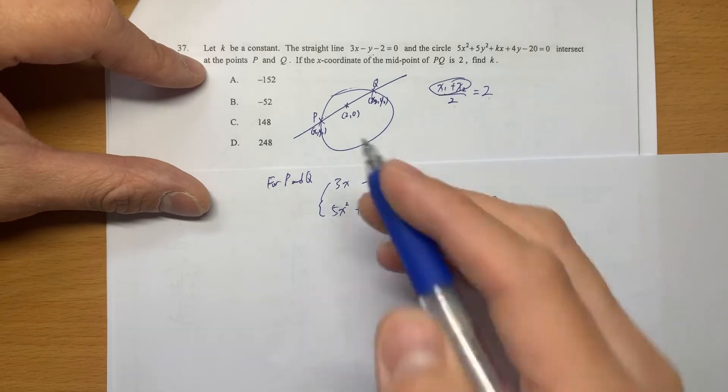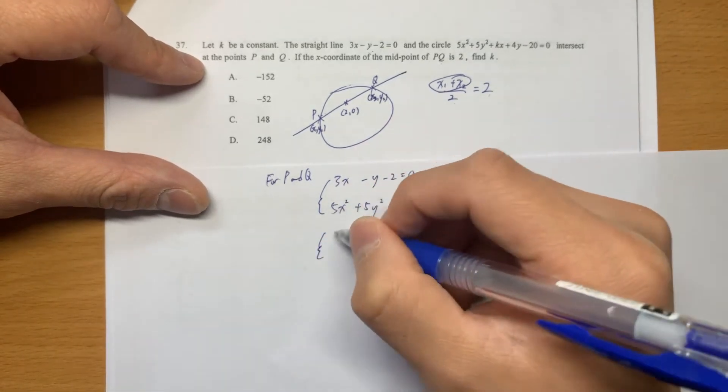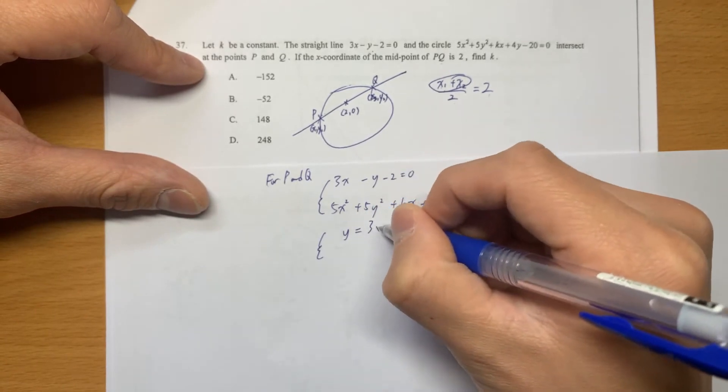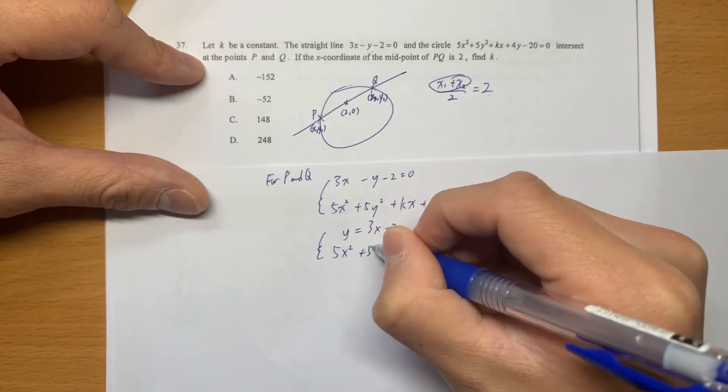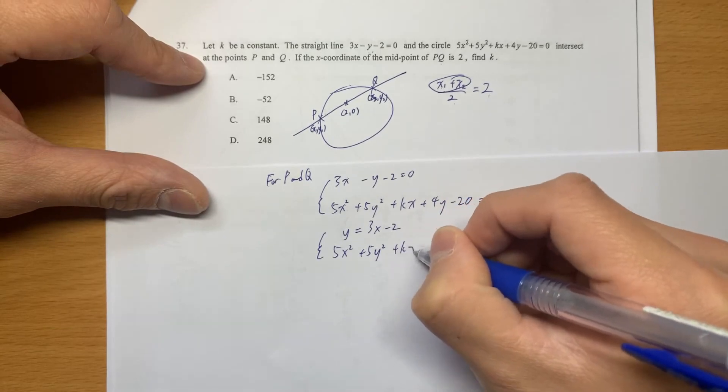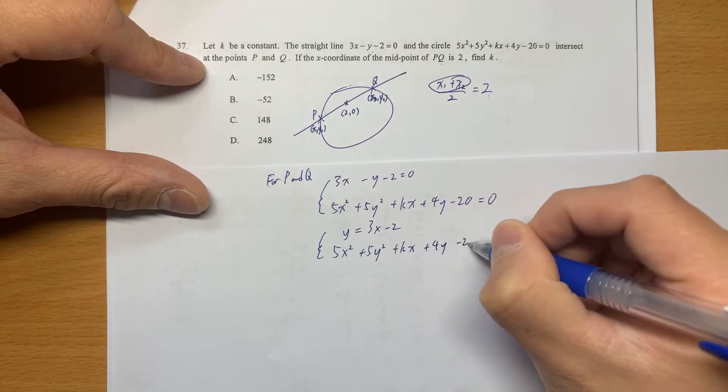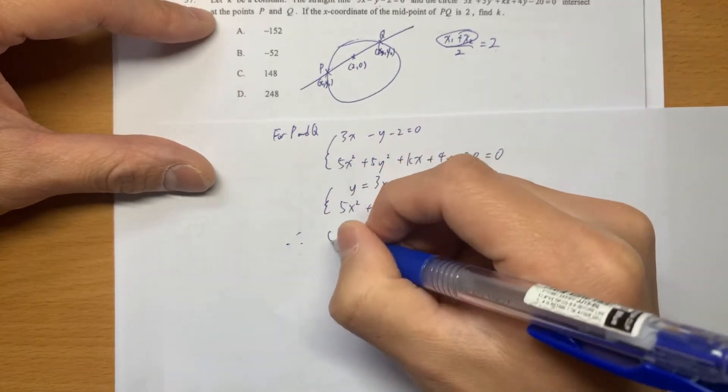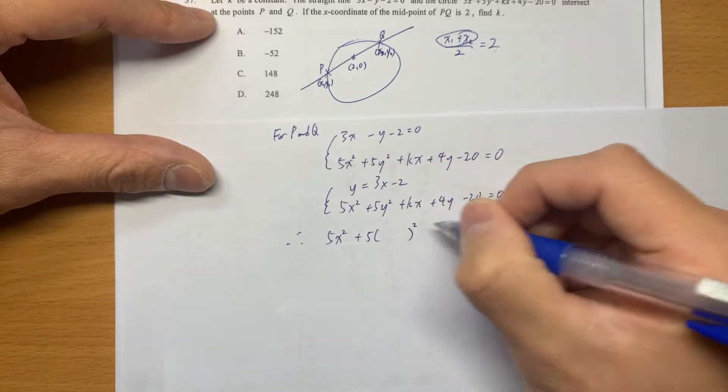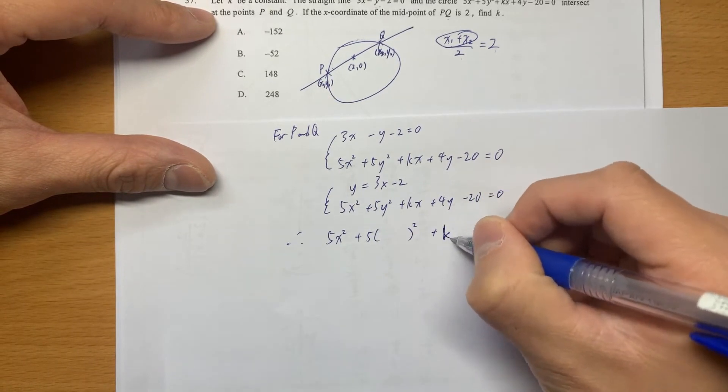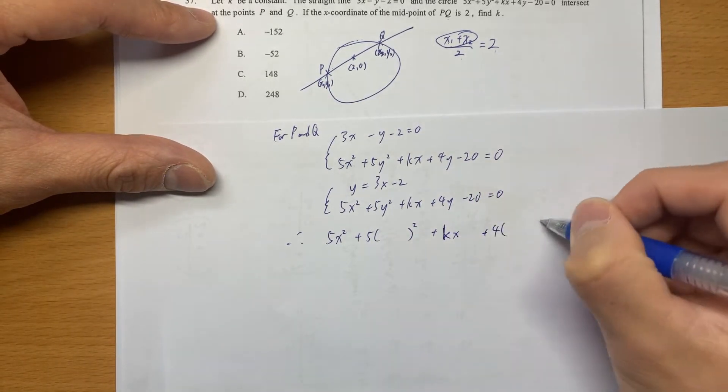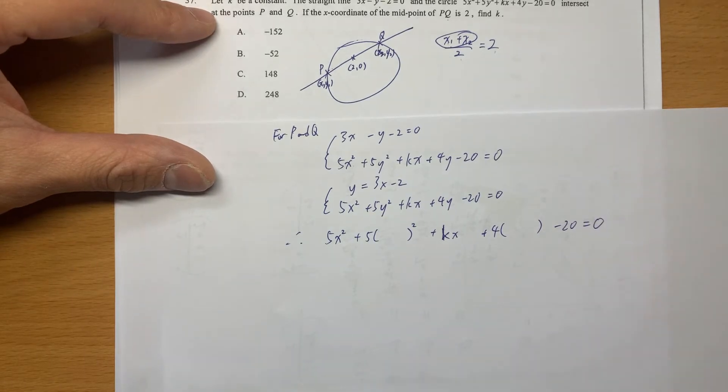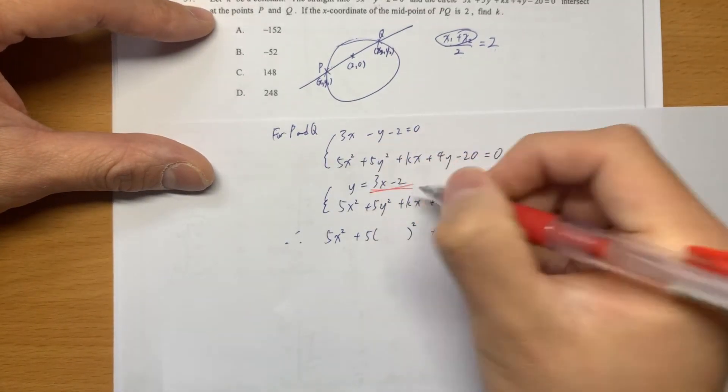So now we are going to substitute and make it become one unknown only. Y is equal to 3x minus 2. Therefore, 5x squared plus 5 something squared plus Kx plus 4 something minus 20 is 0. And that one is 3x minus 2.